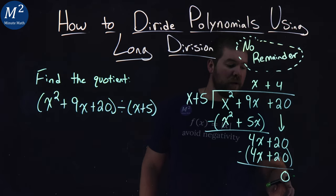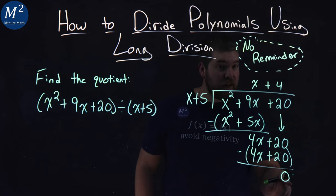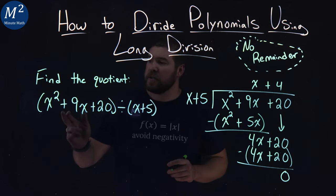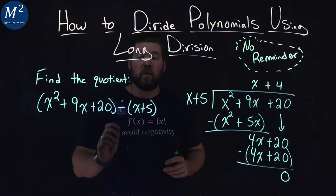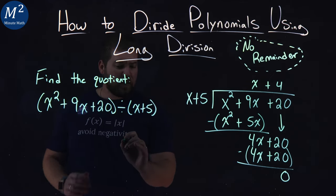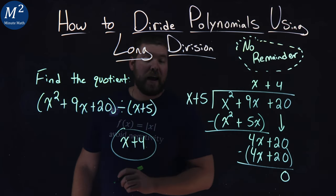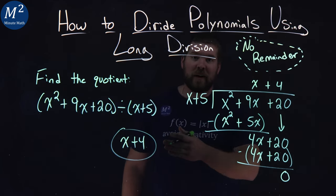And that's the clue here. Once we have the 0 at the end, we know we don't have a remainder. So our question here of x squared plus 9x plus 20 divided by x plus 5 comes out to be x plus 4. And x plus 4 is our final answer.